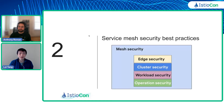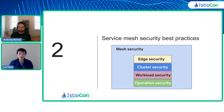Thanks, Anthony. Now I'm going to present the second part of our presentation. As Anthony has said, in order to be secure you need to protect all layers and all components in our service mesh. In the second part, I'm going to give some concrete security best practices for the building blocks of mesh security — namely edge security, cluster security, workload security, and operation security.